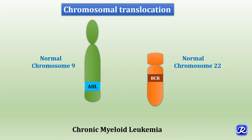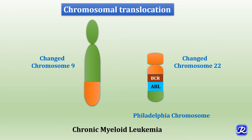Chromosomal translocation also occurs in chronic myeloid leukemia, involving chromosomes 9 and 22. The ABL gene is on chromosome 9 and BCR is on chromosome 22. The terminal segment of chromosome 9 splits off and translocates to chromosome 22, and the reverse also occurs. This translocation leads to chromosome 22 now carrying both BCR and ABL regions, and it is called the Philadelphia chromosome.